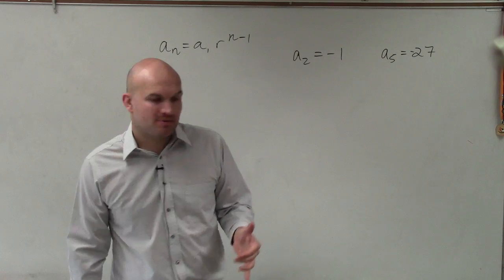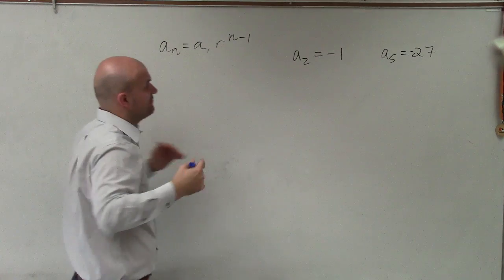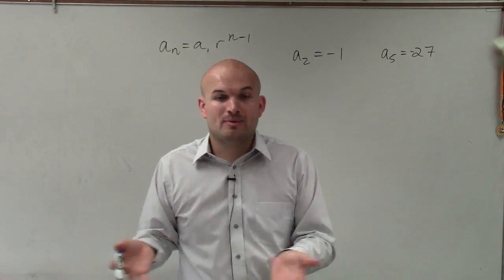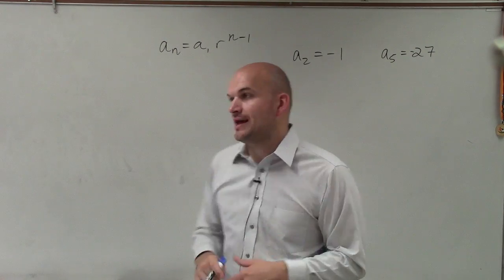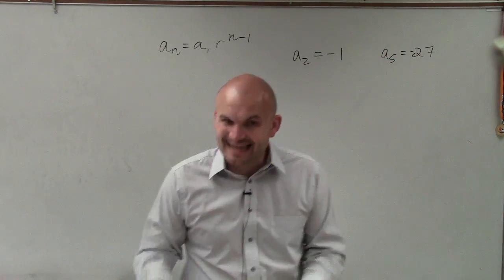The tough thing that comes in with this problem is to find the general rule. You can see n is going to be our rule, the number that we want to find. We're given a sub 2 and a sub 5. What if we want to find a sub 18? We need a formula that we can plug 18 into to evaluate for that. And to find the rule, we need to know what a sub 1 and what r is, and we do not know either.